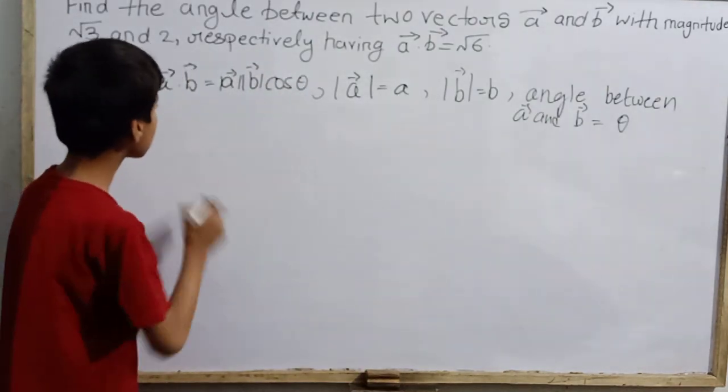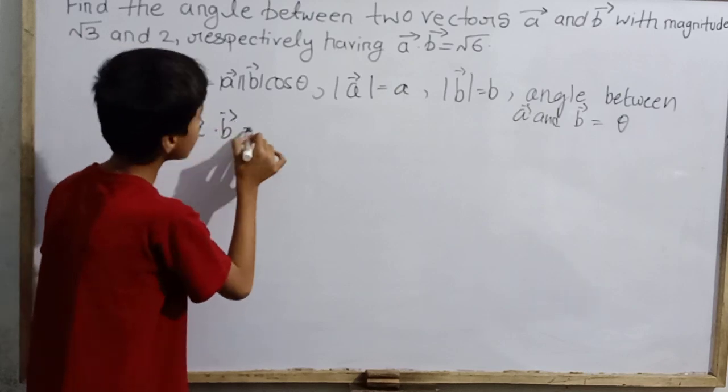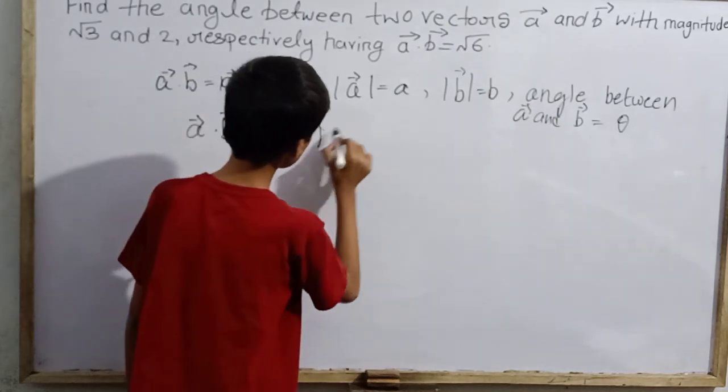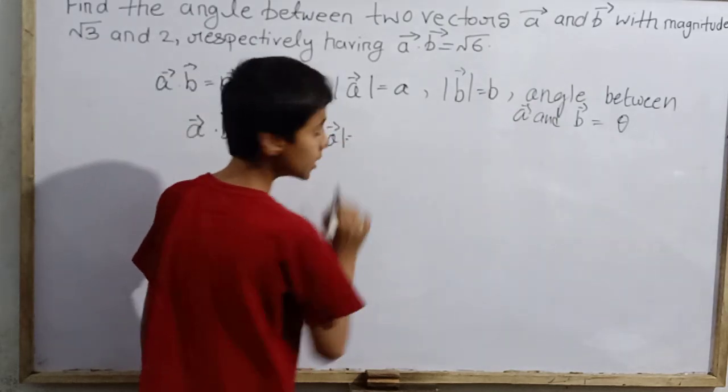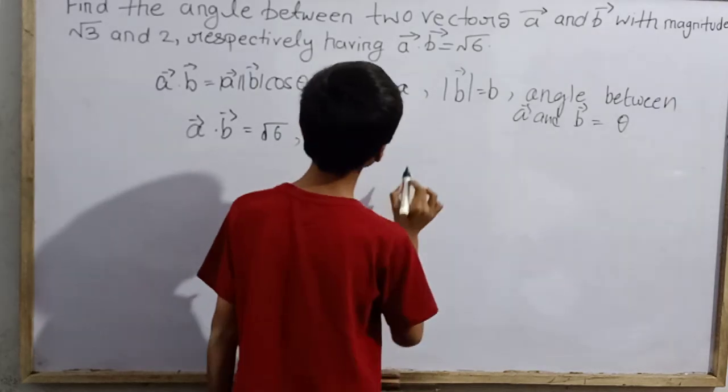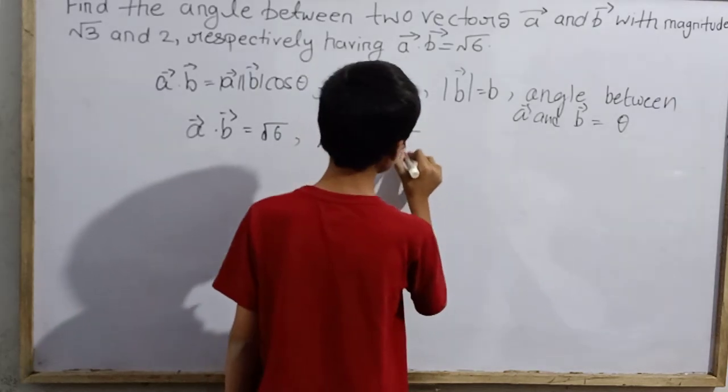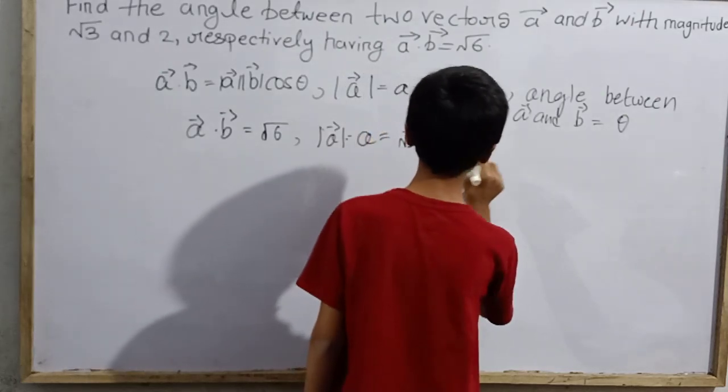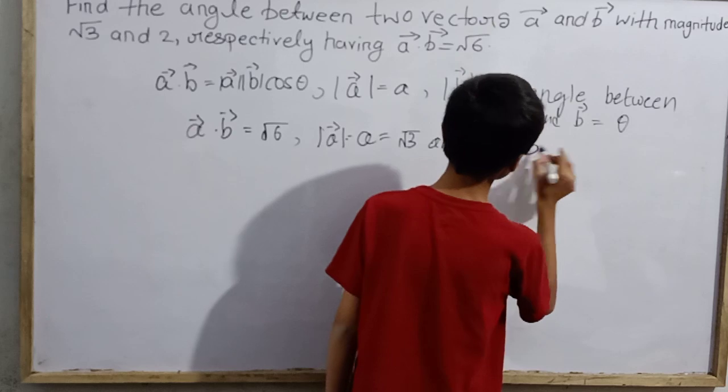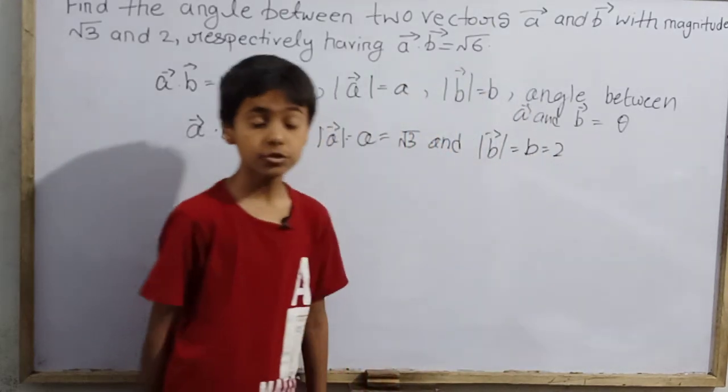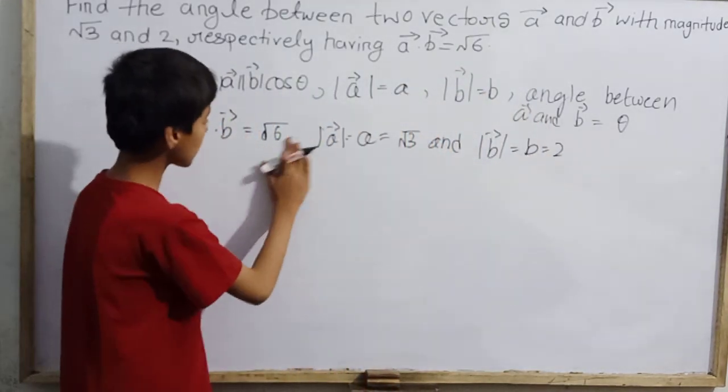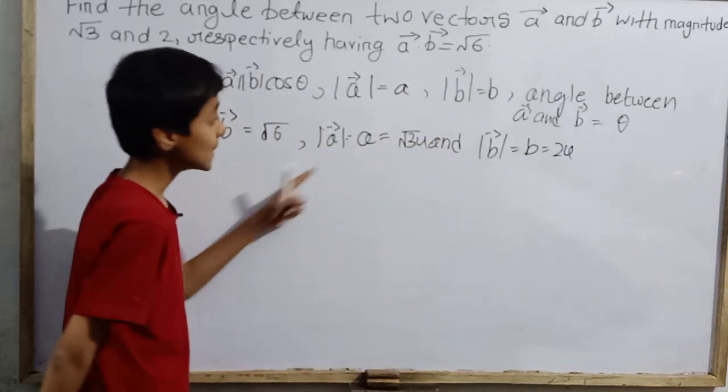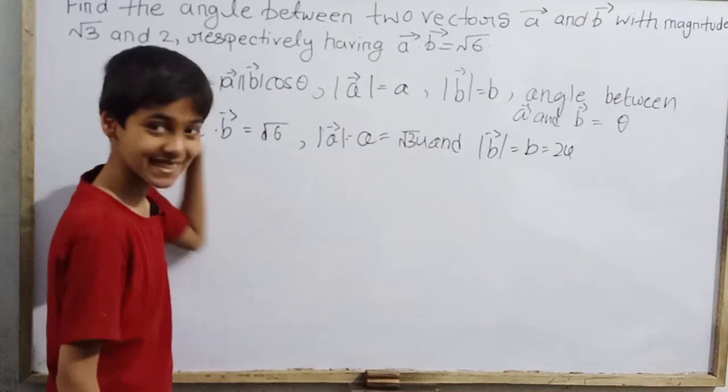I wrote the formula. I know vector A dot vector B is root over 6. I know the magnitude of vector A, which I simply write A, that is root over 3. And I also know that the magnitude of vector B is 2 units. So as a whole, here is also units. Now here is unit into unit, this is unit squared.